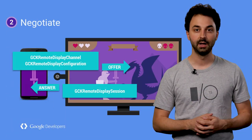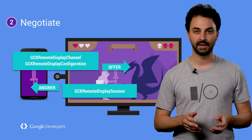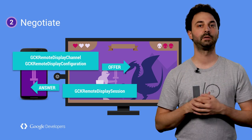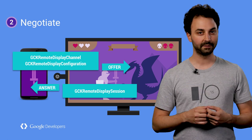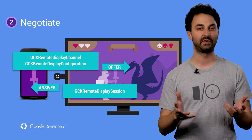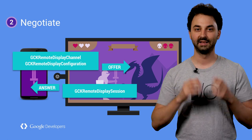In the Negotiation stage, use the Remote Display channel and configuration APIs to offer session parameters to the receiver. If the receiver is happy with the settings, you'll establish a Remote Display session.